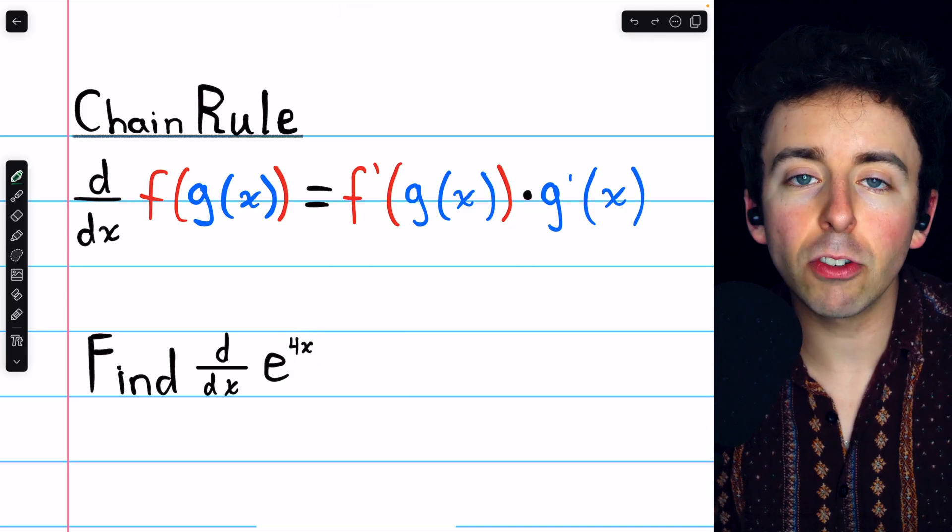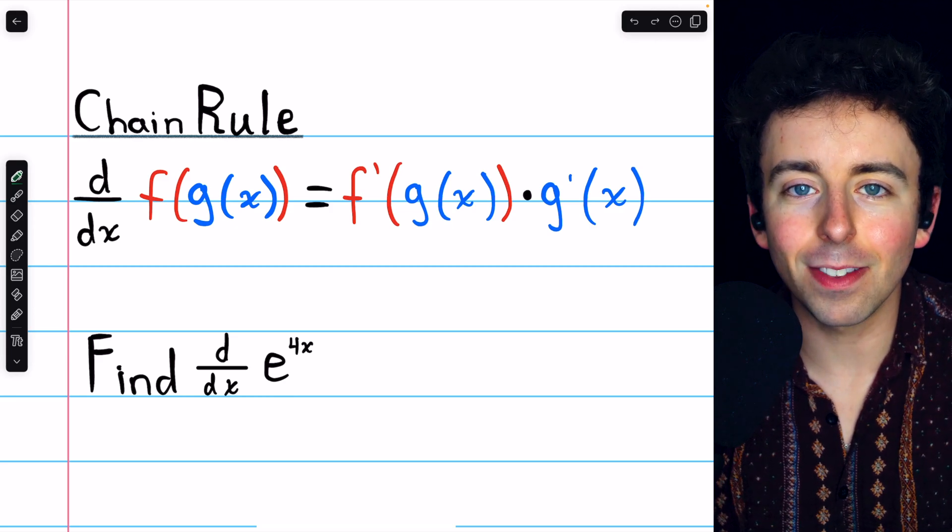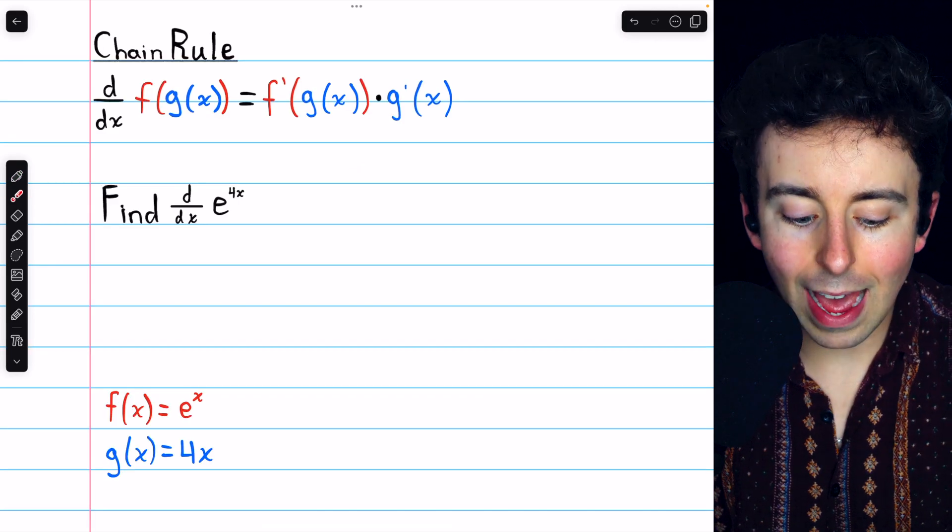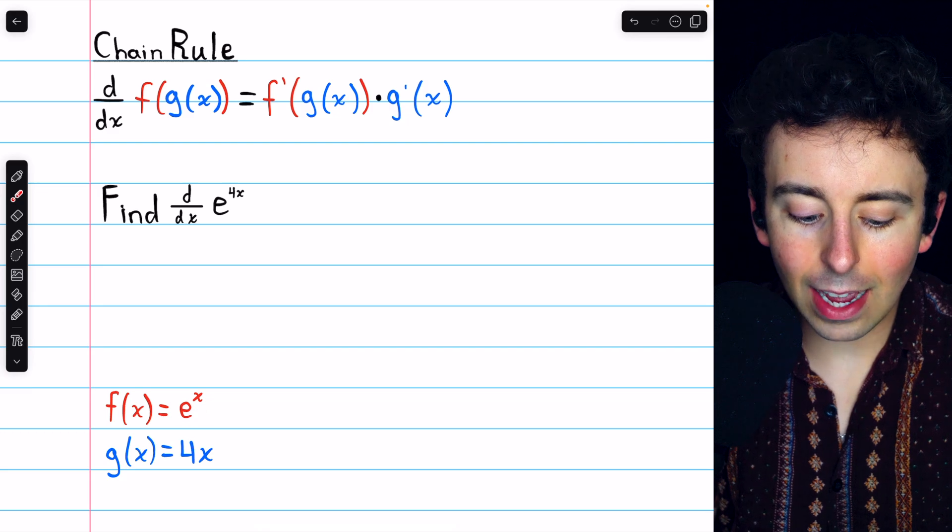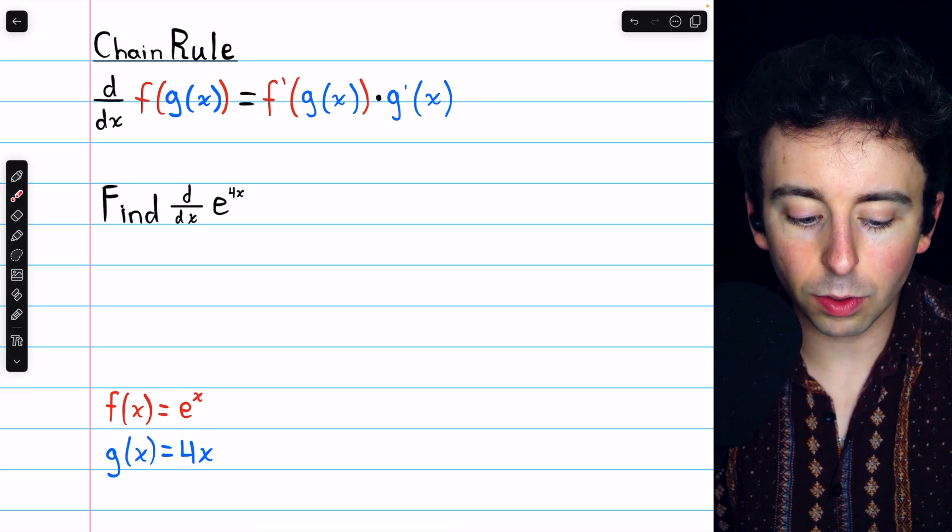Meanwhile, the exponential function is our f, the outside function. So we have f of x equals e to the x and g of x equals 4x.